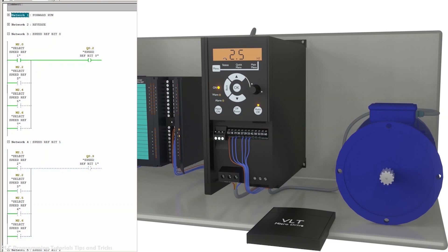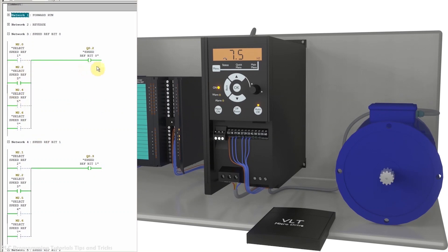Next we turn on M2.1 (select speed reference 2), which turns on Q0.3 (speed reference bit 1) and the VFD loads preset frequency reference 2 — 5 Hz. The motor starts running at 5 Hz. Next, turning on M2.2 (select speed reference 3) activates Q0.3 and Q0.2 — bit 1 and bit 0 — whose sum is 3, so the VFD loads preset frequency reference 3 — 7.5 Hz.